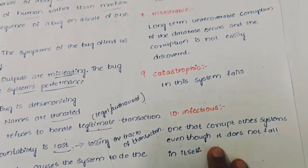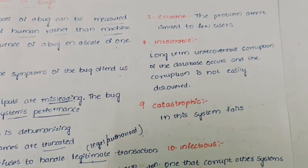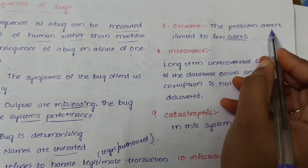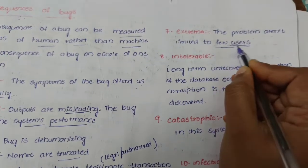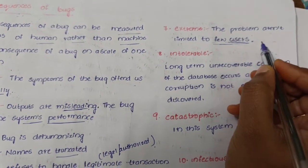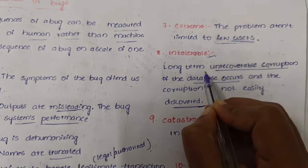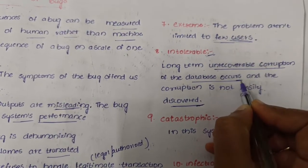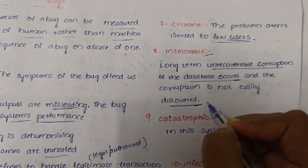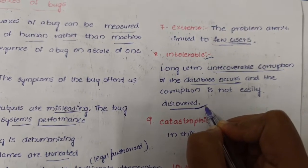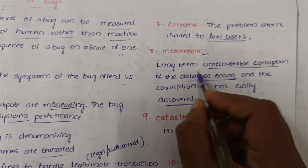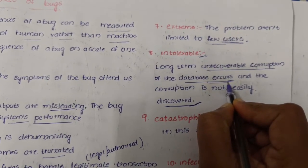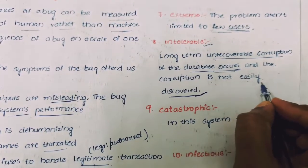And coming to the extreme. Extreme: the problems aren't limited to few users. Intolerable long-term unrecoverable corruption of the database occurs and the corruption is not easily discovered, which is the long-term bug which occurs in the database and is not easily discovered.